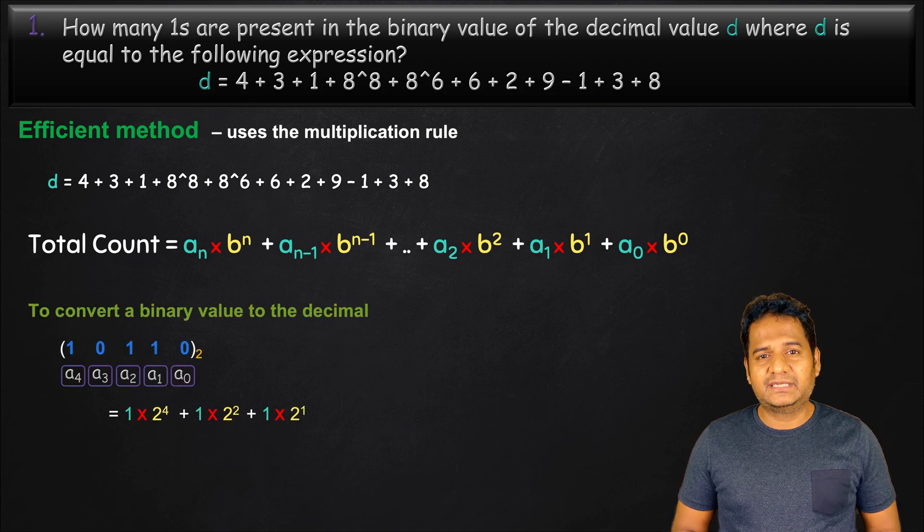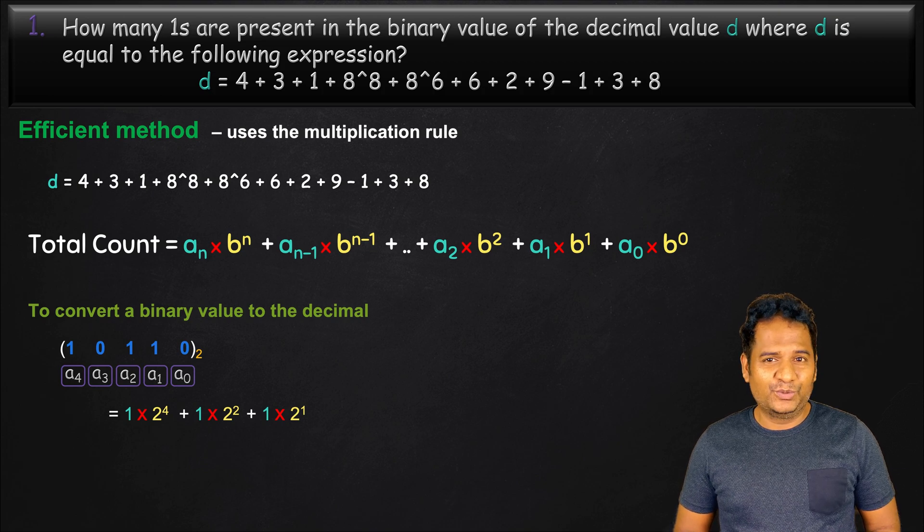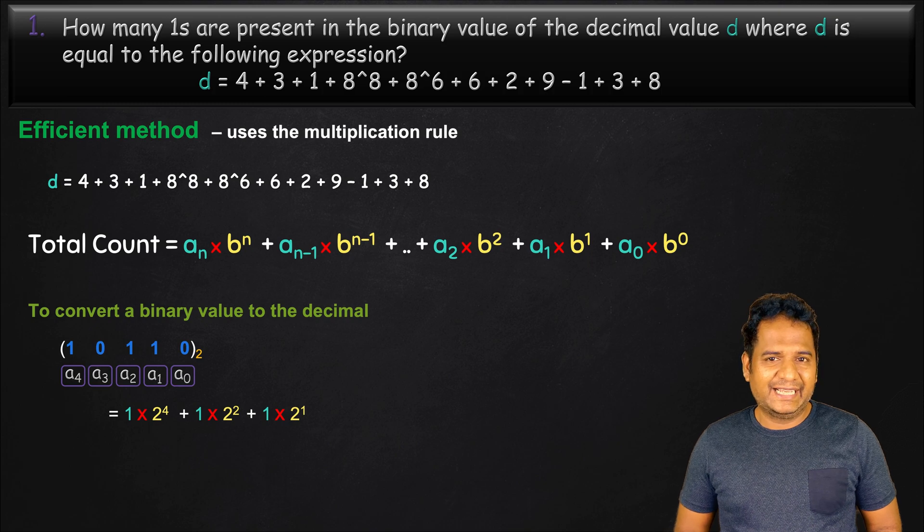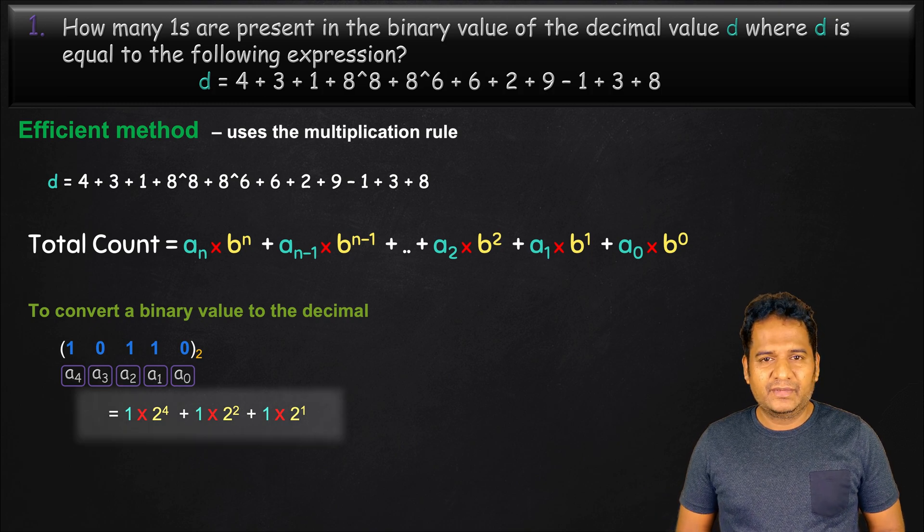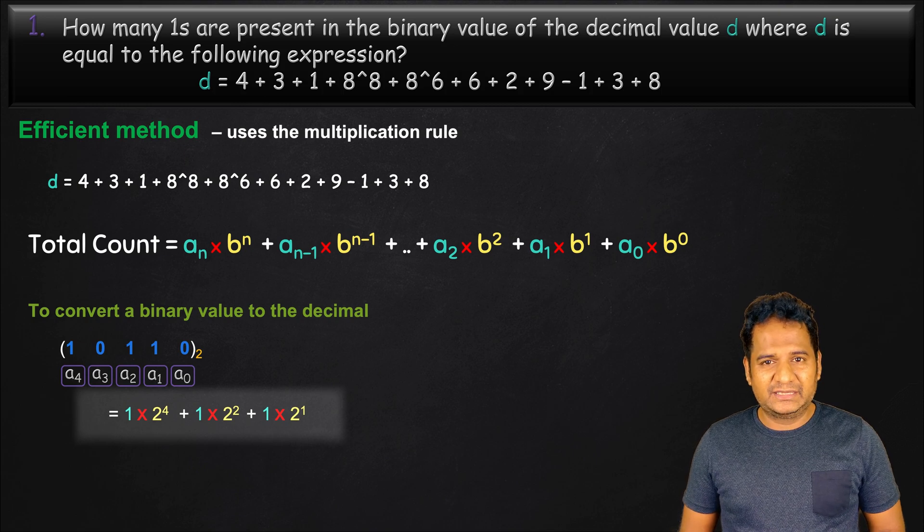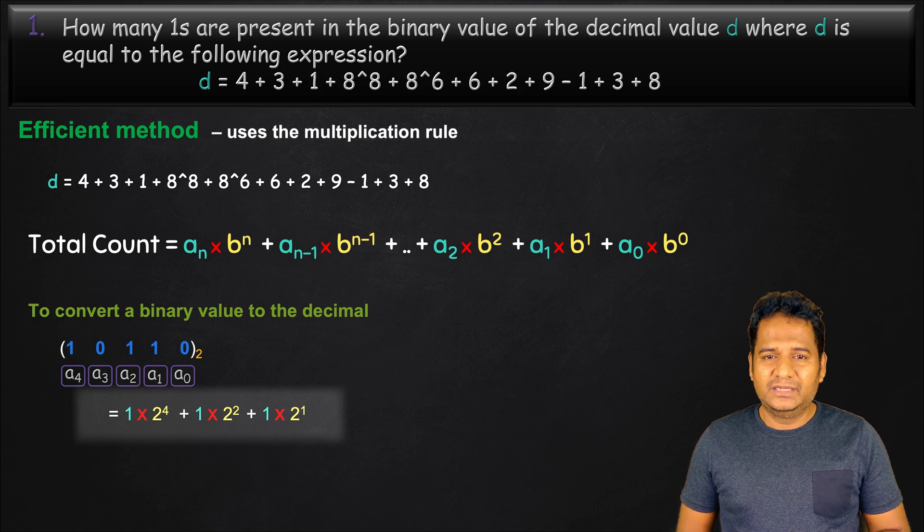When we convert a binary number such as 10110 to decimal, we apply the total count formula and get the expression shown here. Wherever there is a 1 in the binary number, we have 2 power x where x is greater than or equal to 0.